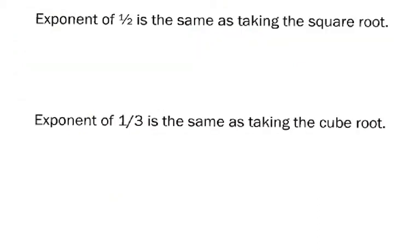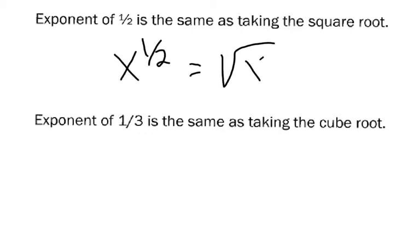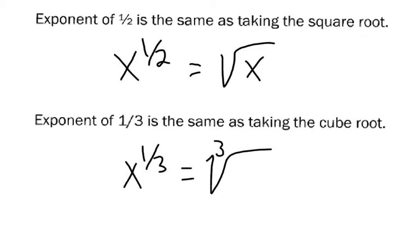Remember: if you have an exponent of one half, that's the same as taking the square root. One fourth is the same as the fourth root, and one fifth is the same as the fifth root.